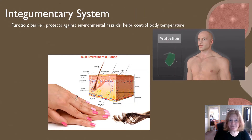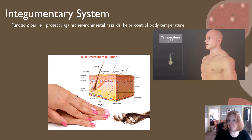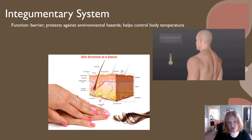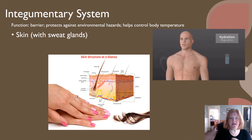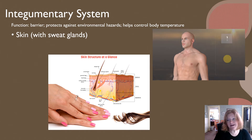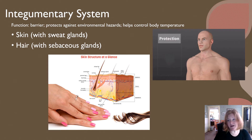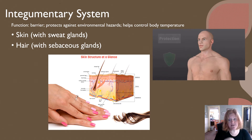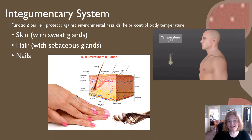Our first system is the integumentary system. The major functions include providing a barrier, which is protection against environmental hazards, and it helps to control your body temperature. The integumentary system includes skin, hair, nails, and glands — skin with sweat glands, hair has sebaceous glands, and one of the sweat glands does excrete into a hair follicle, as well as nails.